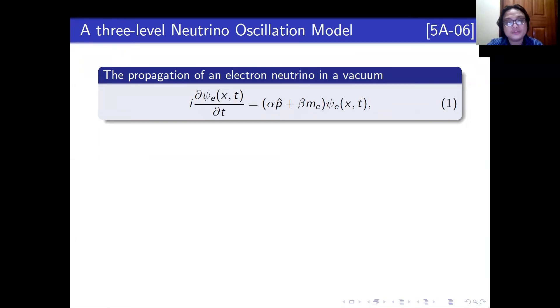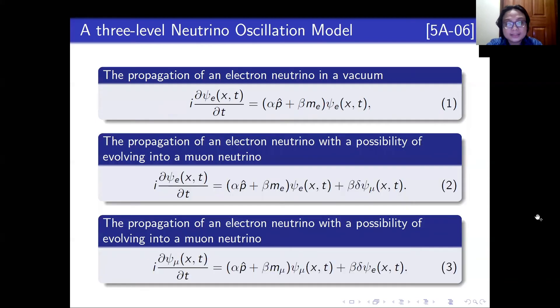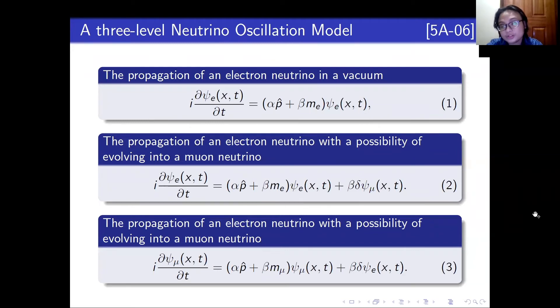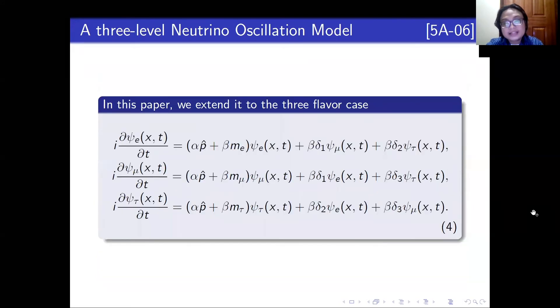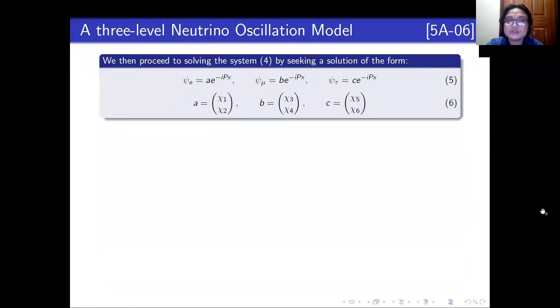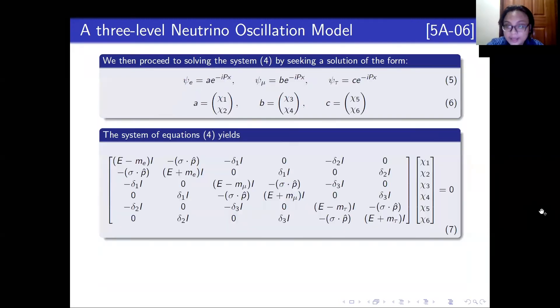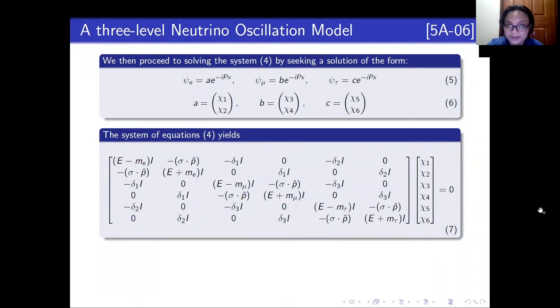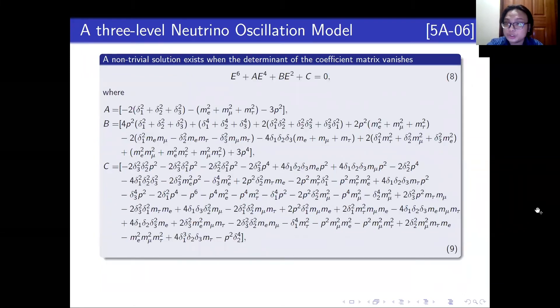For a two-flavor case, the propagation of a neutrino in a vacuum is shown below. When it has the possibility to turn into another neutrino, we add the flavor wave function of that neutrino governed by a flavor-flipping parameter δ, which represents the oscillation strength. We then extend this to a three-flavor case, where a neutrino now has two possible states to oscillate into governed by different flavor-flipping parameters, one for each flavor pair. We then proceed to solve the system by seeking a solution of the form shown below. Using equations 5 and 6, we get equation 7.